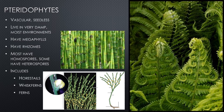Pteridophytes include our ferns and fern allies — still vascular and seedless. They produce spores, live in very damp environments, and still have rhizomes. This time they have megaphylls, meaning branching veins — not constrained to just one vascular strand. Megaphylls are generally associated with the ability to capture more solar energy, making them better photosynthesizers.